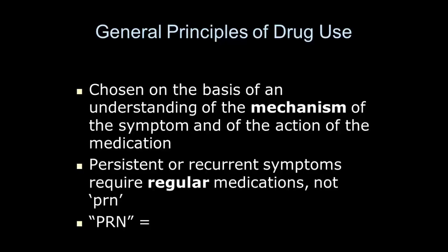The general principles of drug use: you need to understand the mechanism of the symptom and the action of the drug. Persistent or recurrent symptoms require regular medications, not just PRN. PRN technically stands for 'pro re nata' — meaning 'as the thing requires' — but in real life it probably stands for 'patient receives nothing' or 'pain relief never.' You're waiting until someone is in pain before giving them something, and if the tumor is continuously causing pain, it's cruel and probably unethical. That said, you always give regular plus PRN in case they need a bit more.